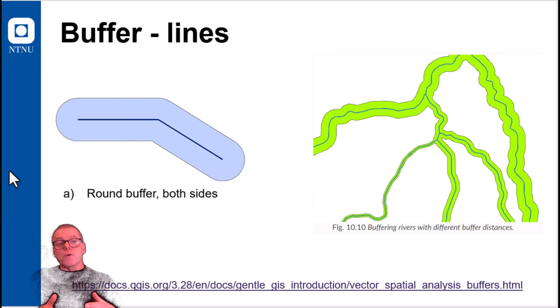Now we can also buffer linear features. And this is one example where you have equal buffer length of the objects. But this may also change just as we had for points.